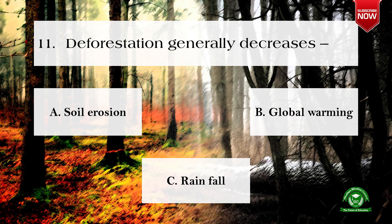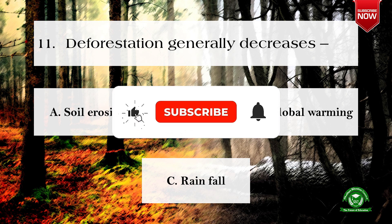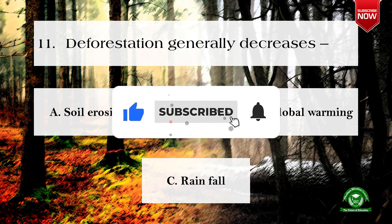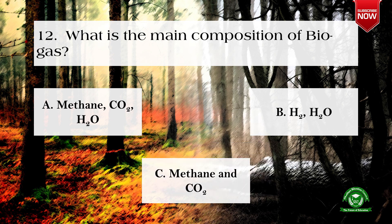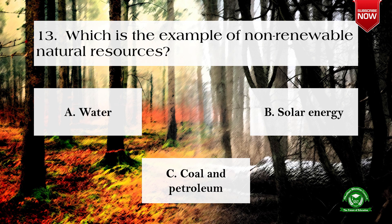Next question: deforestation generally decreases — options are: a) soil erosion, b) global warming, c) rainfall. The correct option is c) rainfall. Next question: what is the main composition of biogas? Options are: a) methane, CO2, H2O, b) H2 and H2O, c) methane and CO2. The correct option is c) methane and CO2.